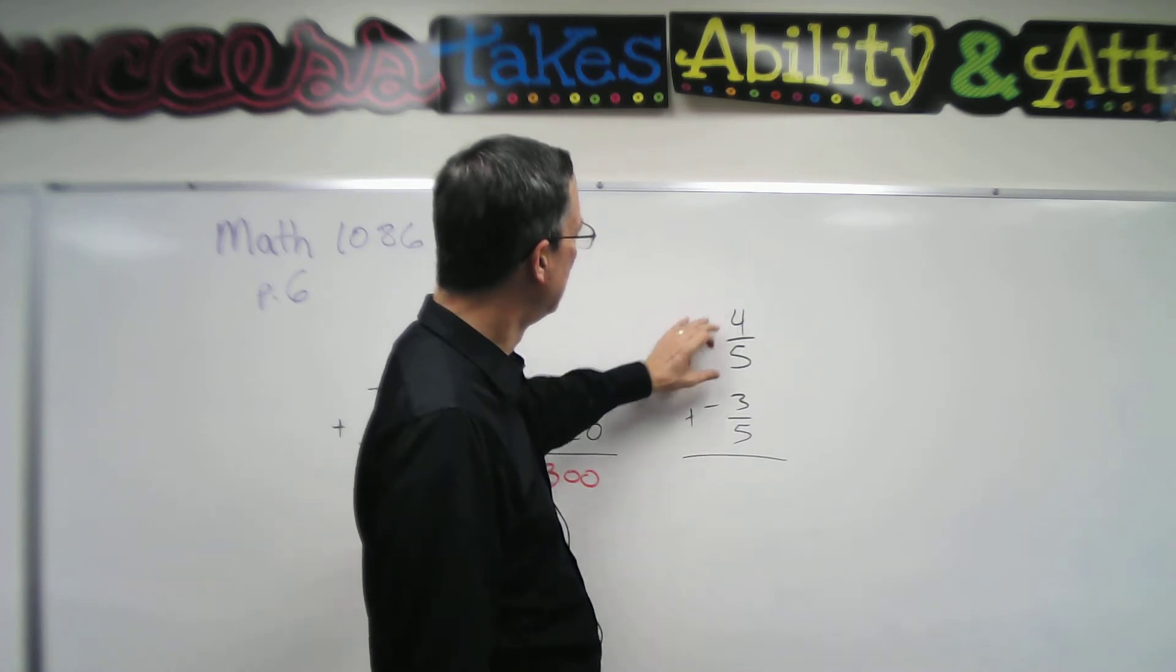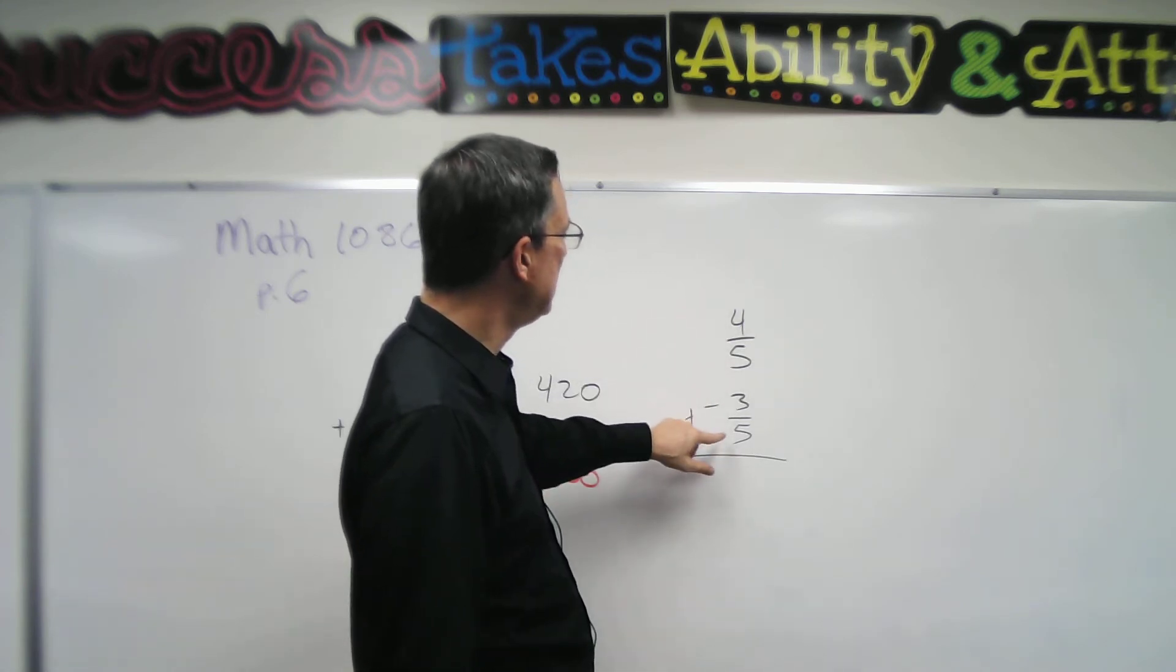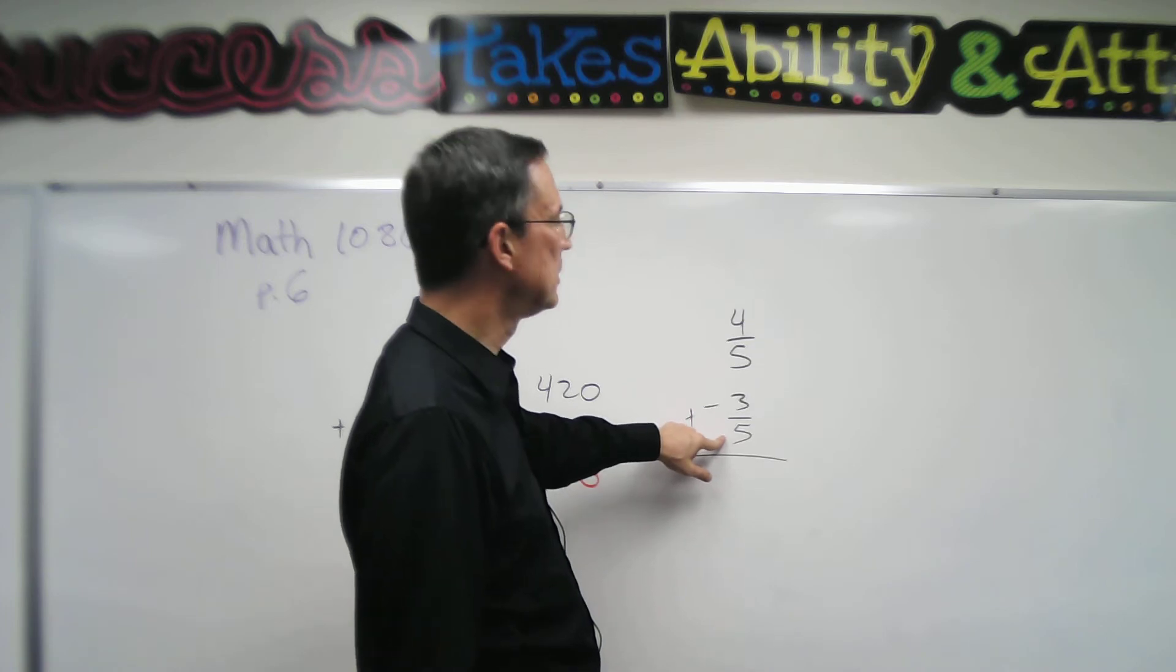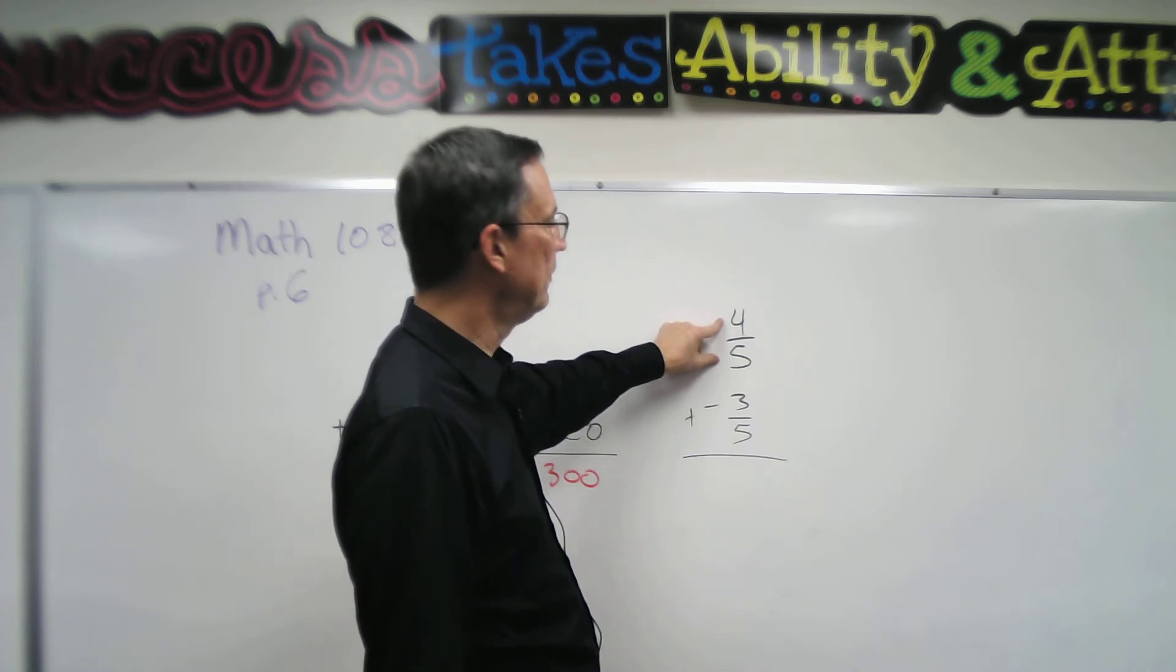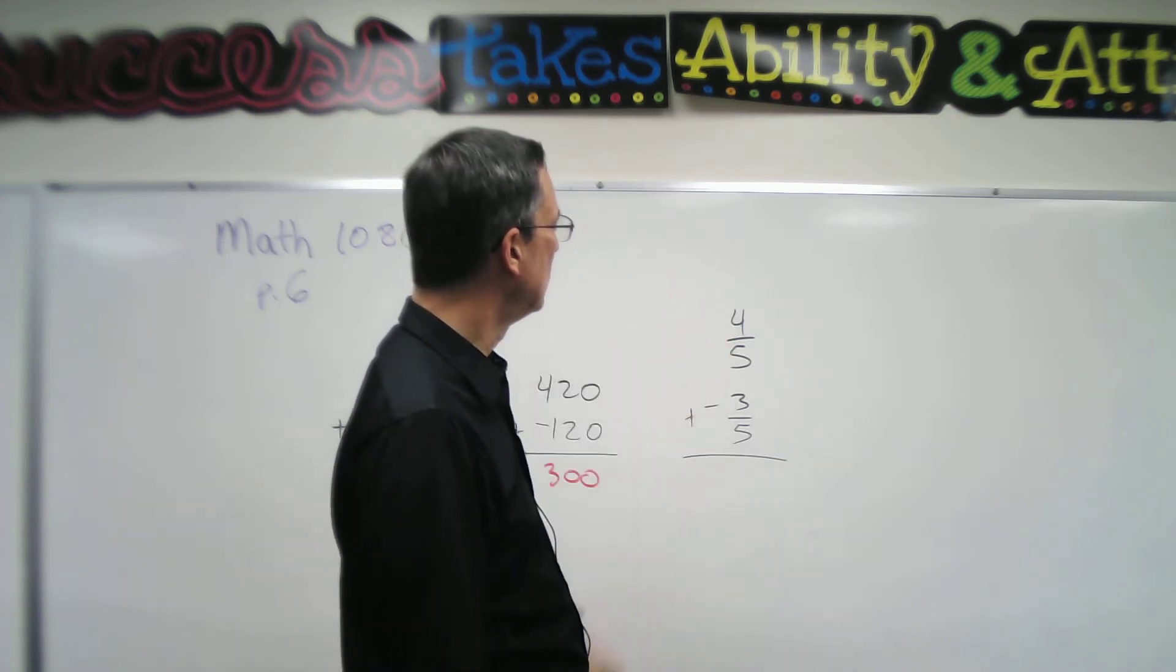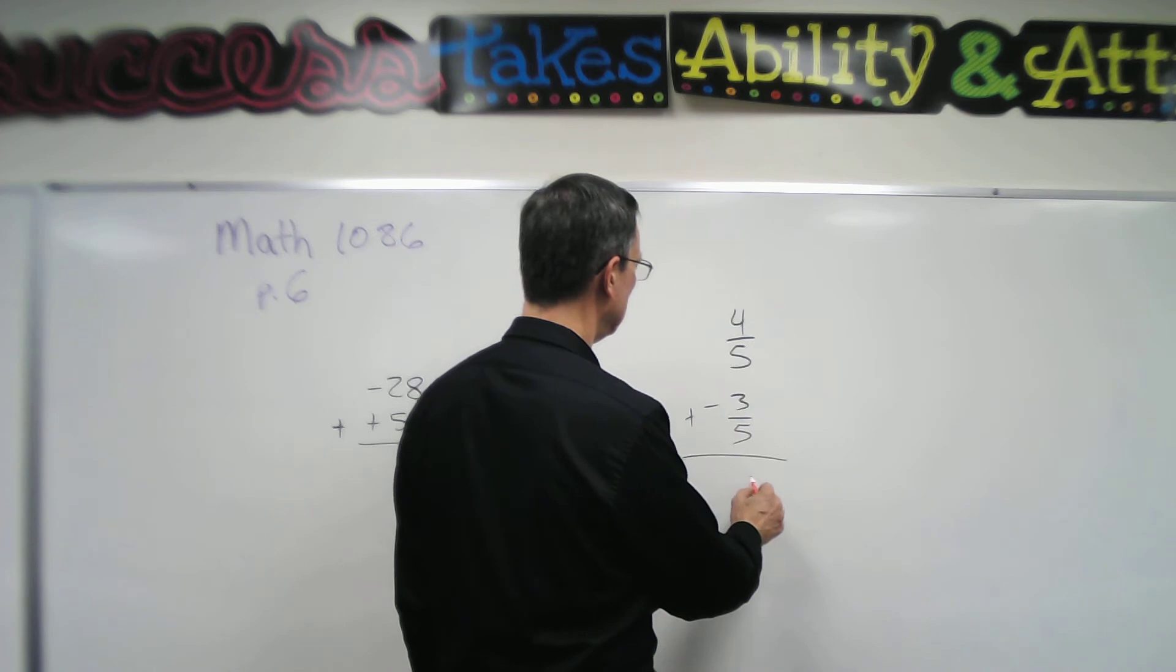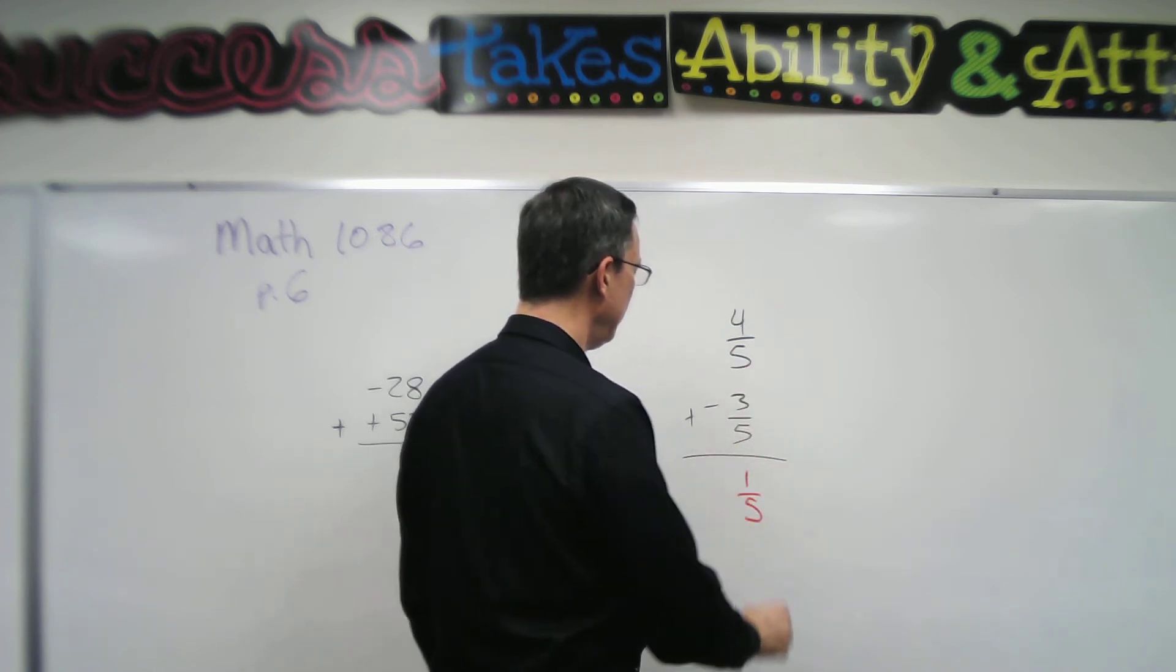We're adding a positive plus a negative. So we're going to subtract the smaller fraction, 3 fifths from 4 fifths, which would give us 1. Four minus three is one, one fifth.